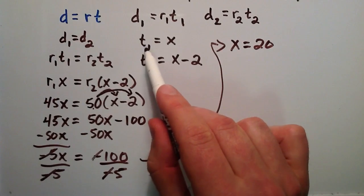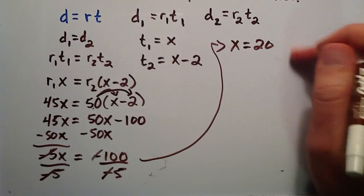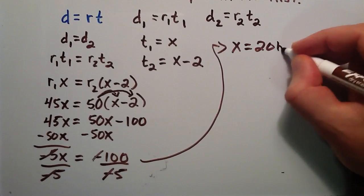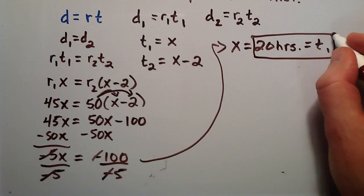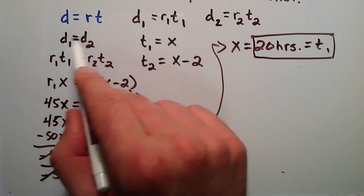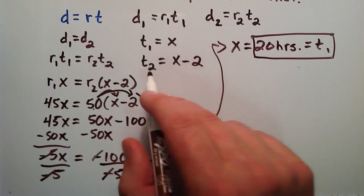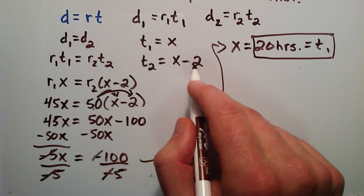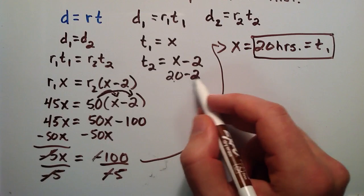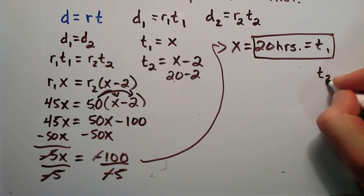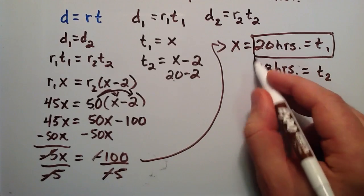So x equals 20. We said x equals t1, the time train 1 has traveled, so train 1 has traveled 20 hours when the two trains catch up. What about train 2? Train 2 has traveled the same hours minus the two hours it waited at the station: 20 minus 2 equals 18. So train 2 has traveled 18 hours to reach the catch-up point.